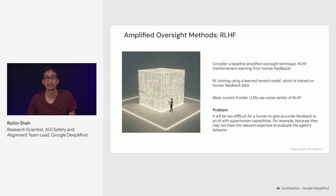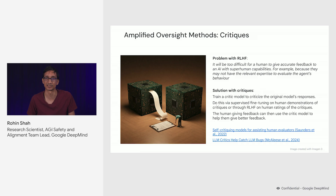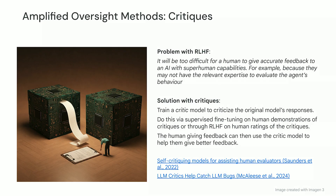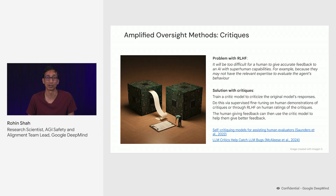So based on that problem with RLHF — that it's too hard for the humans to give accurate feedback — one possible solution approach is critiques. In critiques, we basically train a critic model to criticize the original model's responses. We can do this either by training the critic model to mimic human demonstrations of critiques, or using RLHF on human evaluations of the critiques produced by the critic model. Once we have a fully trained critic model, we can then provide it to the humans giving feedback on the original AI system, and this can let the human give better feedback than they otherwise would have given.